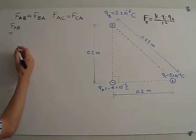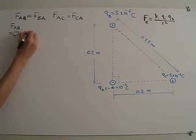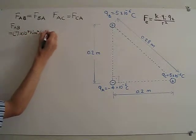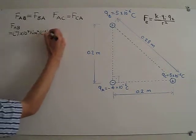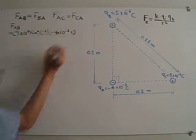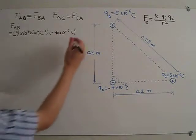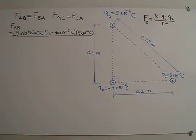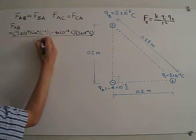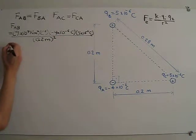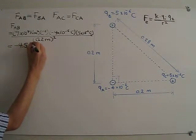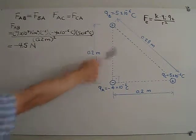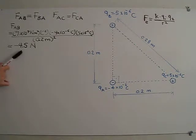FAB will be given by K, which is 9 times 10 to the 9 Newtons meters squared per Coulombs squared, times QA which is minus 4 times 10 to the negative 6 Coulombs, times QB which is 5 times 10 to the negative 6, divided by the distance which is 0.2 meters squared. The result of this calculation is minus 4.5 Newtons. Because this sign is negative and the two charges are opposite in sign, this is an attractive force.